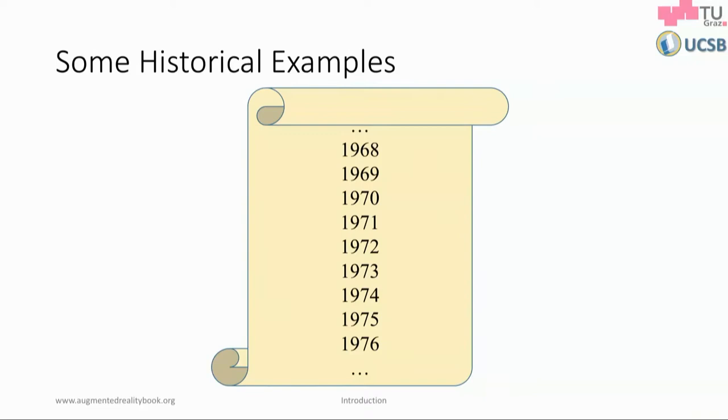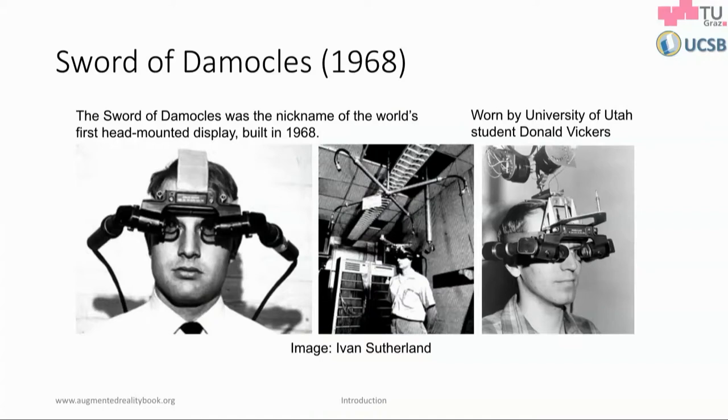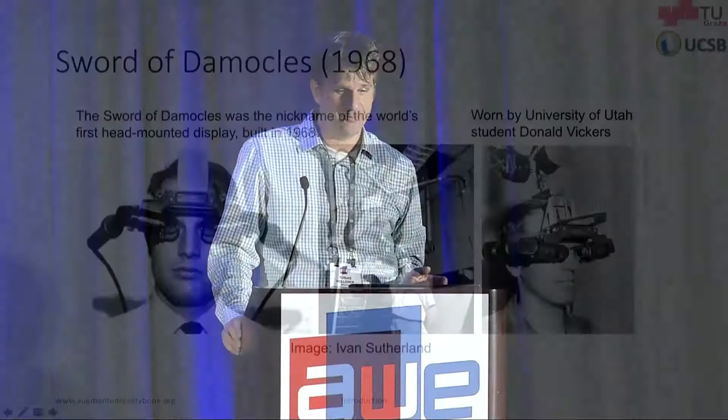Going into a brief history: Ivan Sutherland built the first augmented reality display in 1968, nicknamed the Sword of Damocles because it had a mechanical tracker and hung from the ceiling — a joke was that it could come down and kill you anytime. But it really was an augmented reality device, 25 years before the term was even coined. It overlaid line graphics — oscilloscope-style vector graphics — on top of a physical board so you could have a virtual interface.